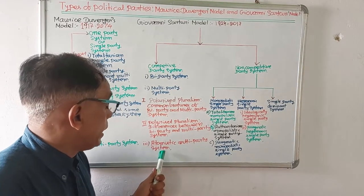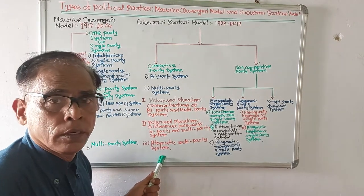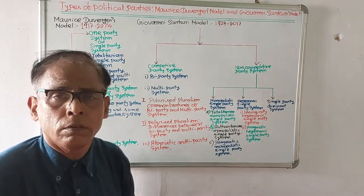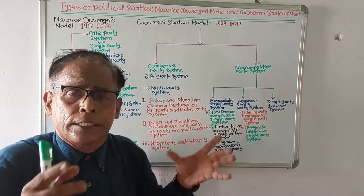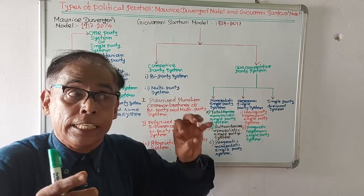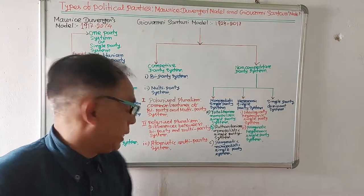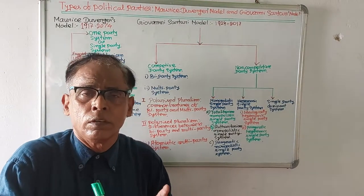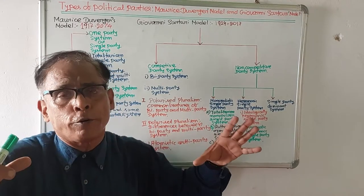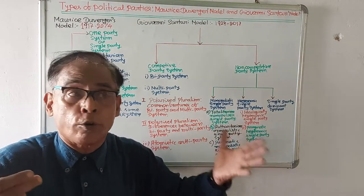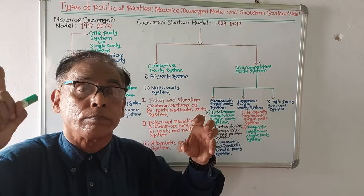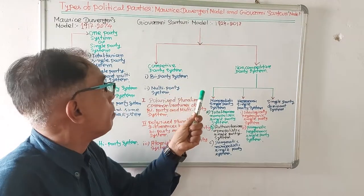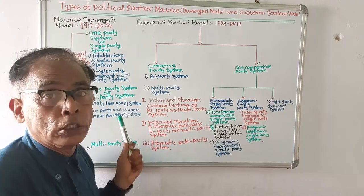He also describes the atomistic multi-party system. In an atomistic multi-party system, there are many parties but each party is different from the other. It is a system where multiple parties are found — many political parties are found — but each party is different from the other. This concludes the competitive party system of Giovanni Sartori.